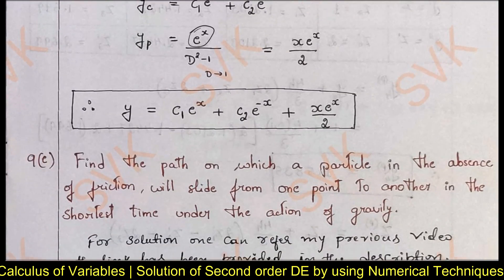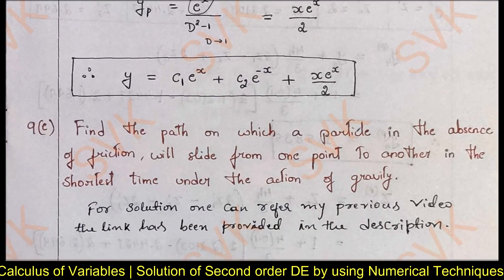Moving on to question 9c: find the path on which a particle, in the absence of friction, will slide from one point to another in the shortest time under the action of gravity. This problem is on the brachistochrone method. I have discussed this problem separately — you can go through that video via the link in the description. It is a very important problem for your examination.